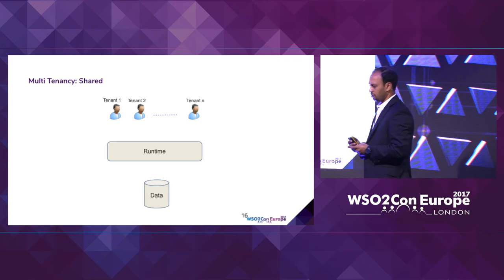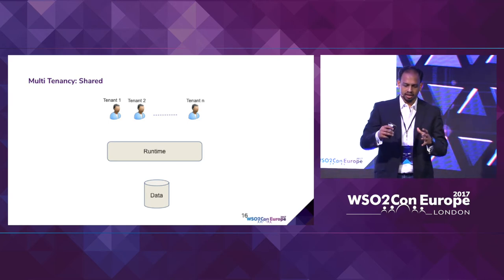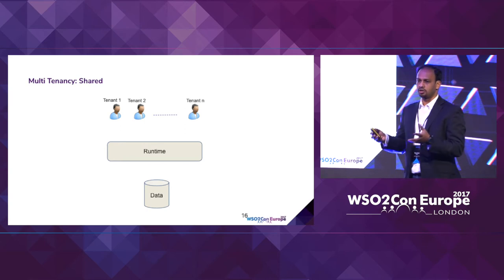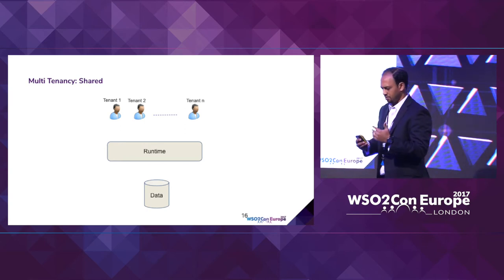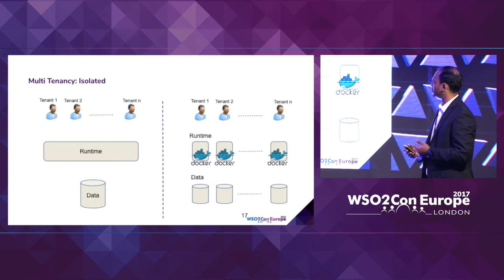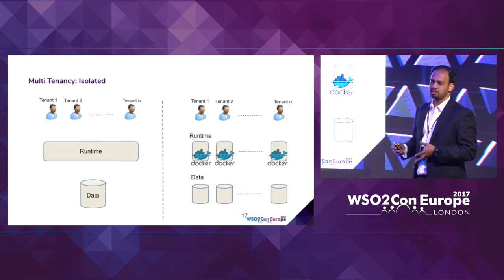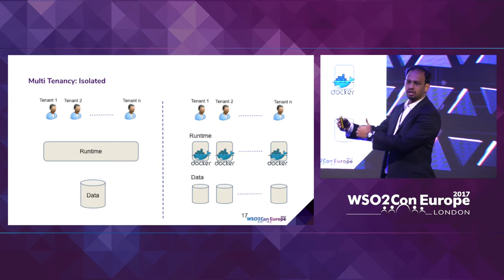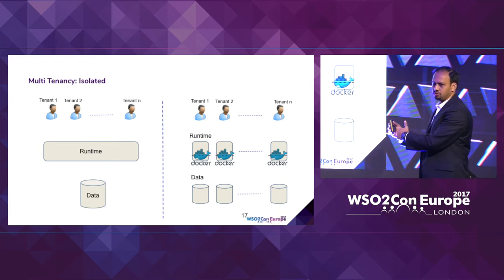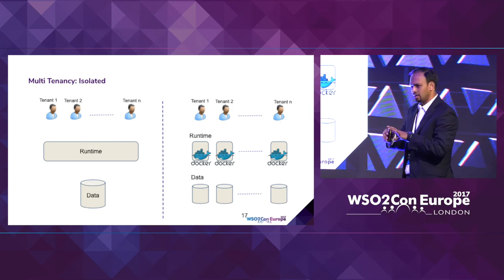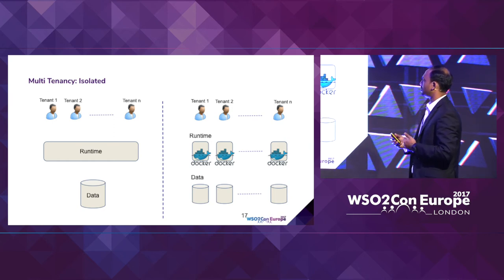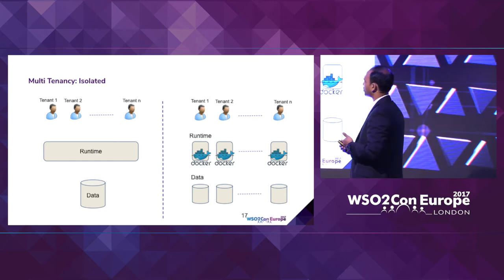We are moving into multi-tenancy as well. The current multi-tenancy mode is a shared model where multiple tenants execute their code on the same JVM, which limits scalability. We are moving to an isolated multi-tenancy model where each tenant gets its own runtime. One tenant's performance does not impact another, and you get independent scalability per tenant — that's our approach to addressing multi-tenancy in the cloud native microservices world.